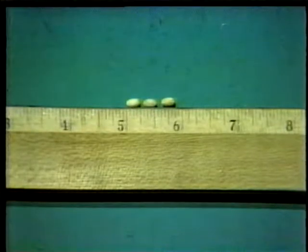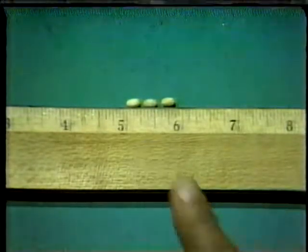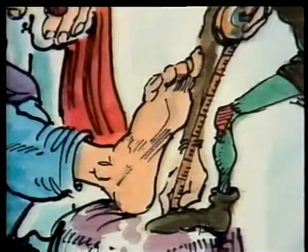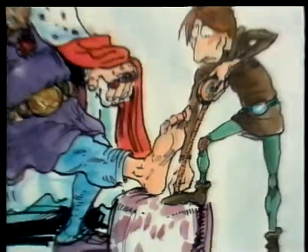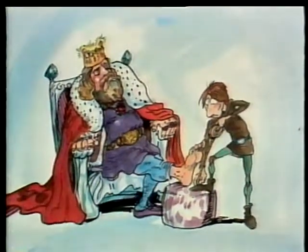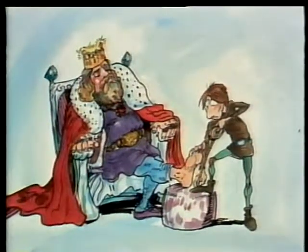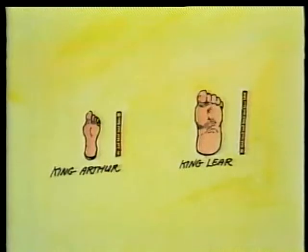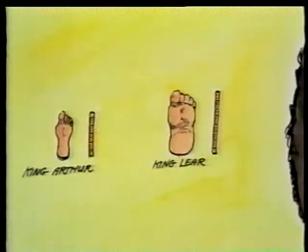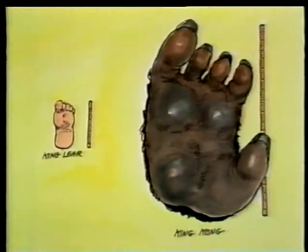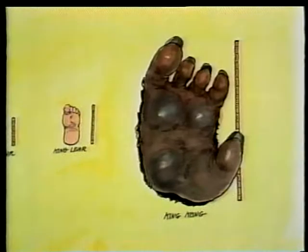Another unit of measurement with an interesting history is the foot. Nowadays, we know that a foot is 12 inches, the length of this rule. But centuries ago, a foot was just that — the length of a man's foot, usually the king's. That led to some problems because every time a new king came to the throne, the definition of a foot changed.